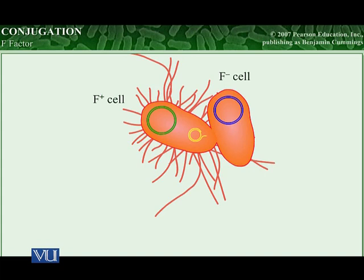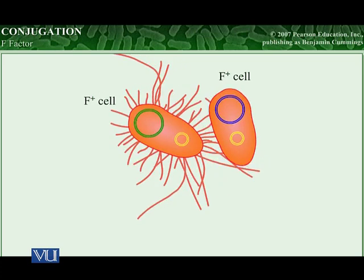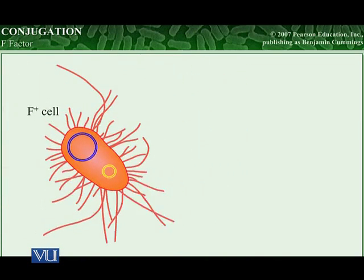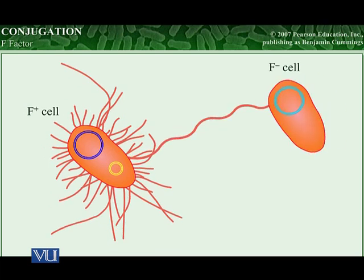The transfer of DNA then begins. A single-stranded copy of the F-factor is transferred from the F-plus cell to the F-minus cell. Each cell synthesizes a complementary strand of the plasmid, resulting in a complete copy of the plasmid in each cell. After conjugation, both cells contain a copy of the F-factor; therefore, both cells are now F-plus cells and can go on to initiate conjugation with other F-minus cells.